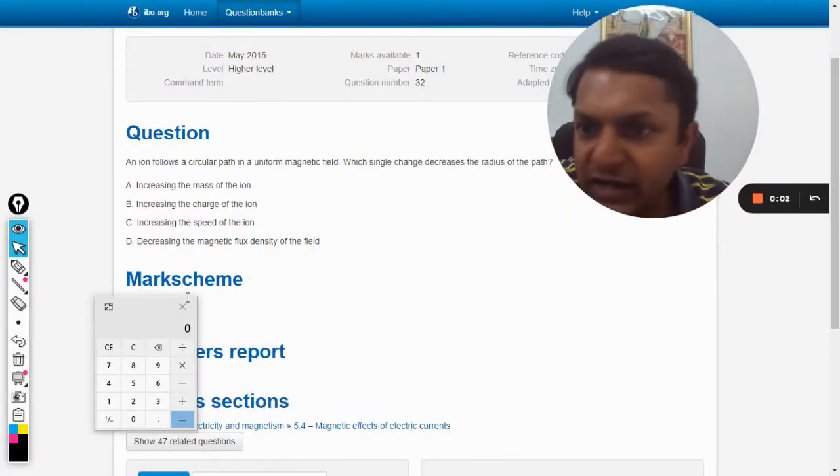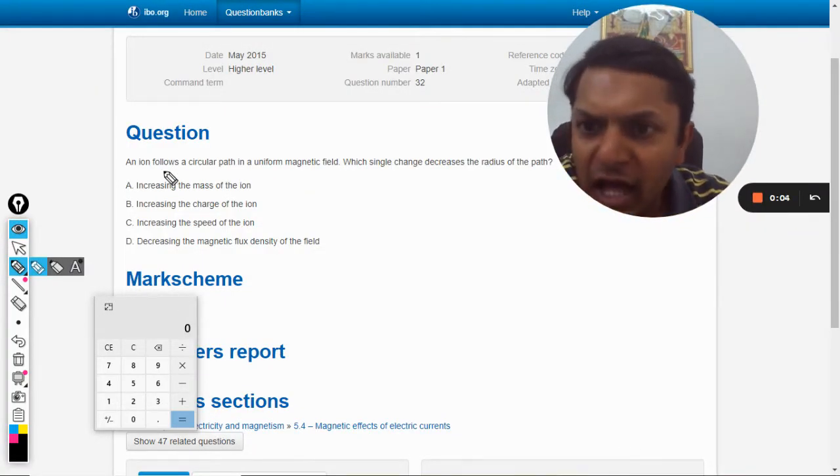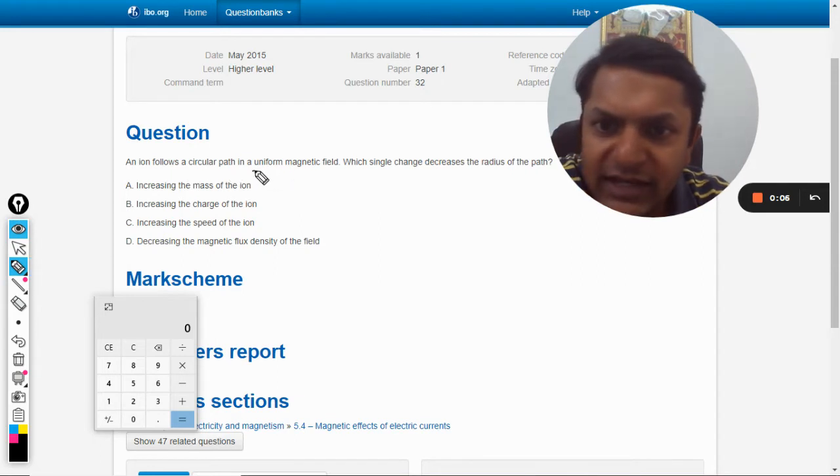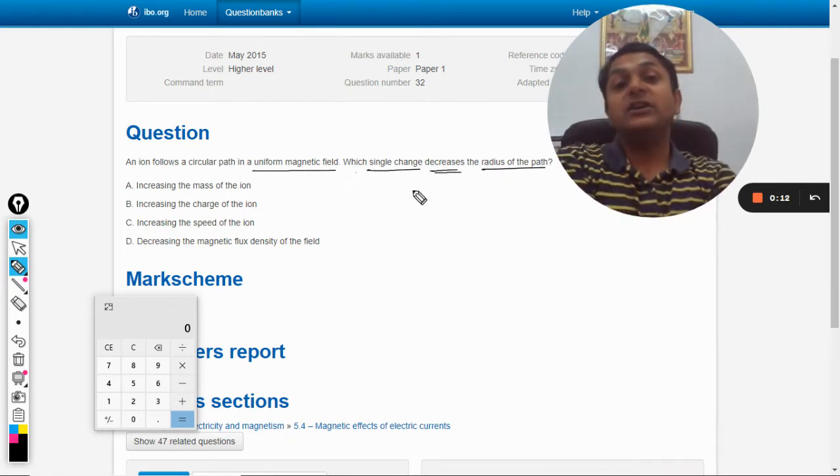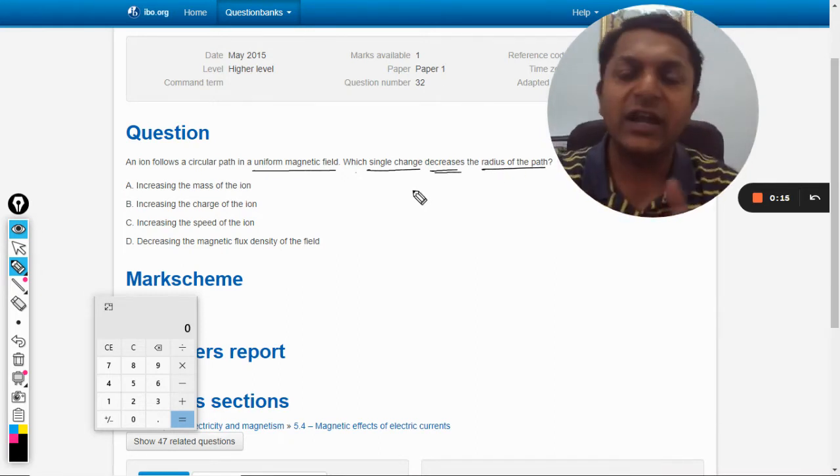Okay, so let us read this question: an ion follows a circular path in uniform magnetic field, which single change decreases the radius of the path? So first of all we must understand how to find the radius of this thing.